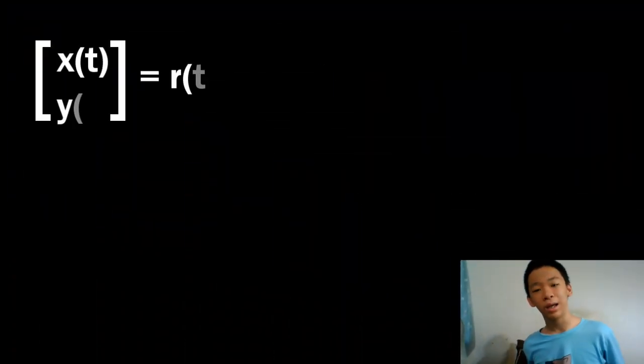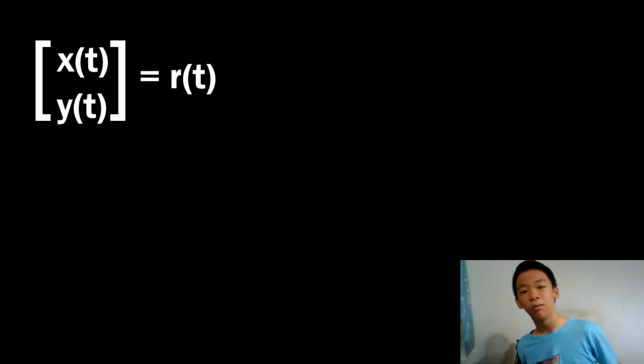The other way we can solve this matrix question is to compact x of t, y of t into the position vector r of t, rewriting it like dr over dt equals a times r, where a is the matrix a, b, c, k, of course.